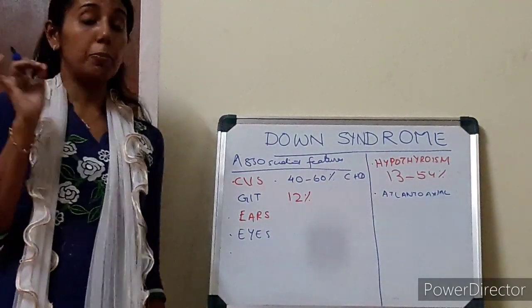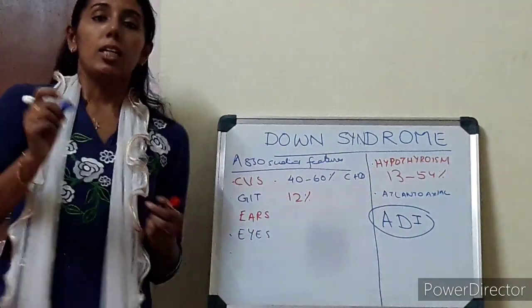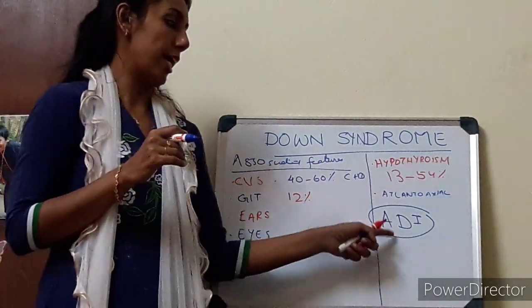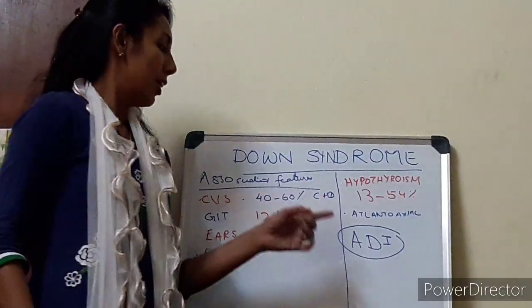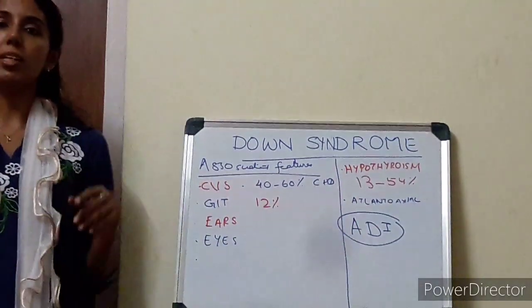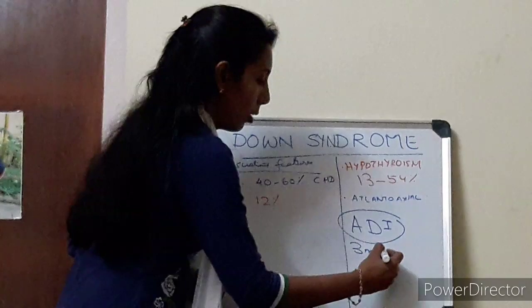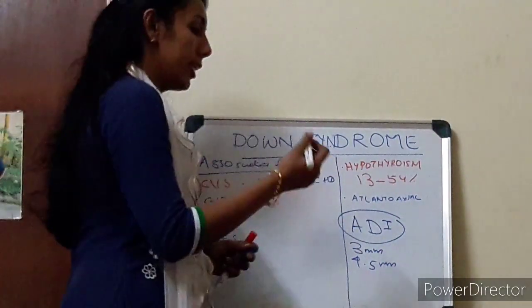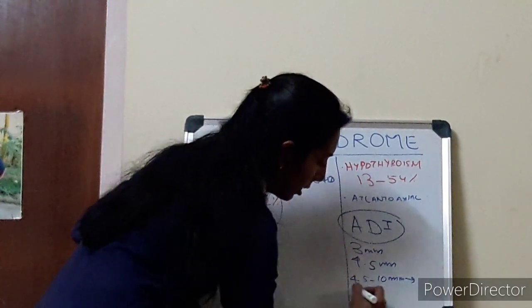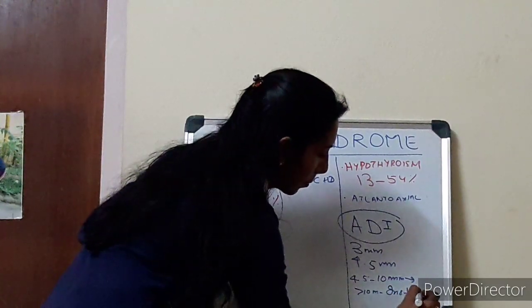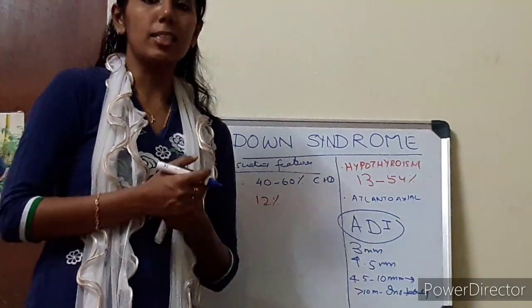This is important for PG students and exam aspirants. There is something called ADI — atlanto-dens interval — which is the relationship between C1 and C2. The atlanto-dens interval shows us the relationship between C1 and C2; it is the distance between the dens and C1. In normal children it is around 3 millimeters. In Down syndrome, up to 4.5 millimeters is taken as normal; anything from 4.5 to 10 millimeters is taken as hyper-extensibility; and more than 10 millimeters is taken as instability.